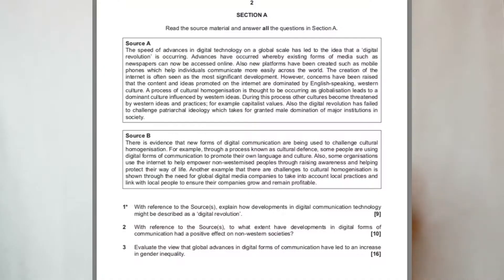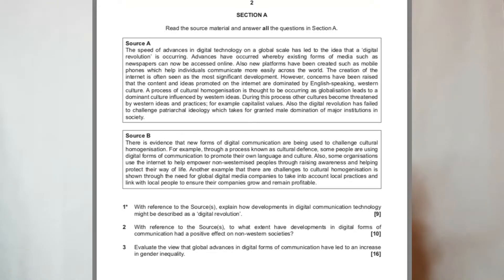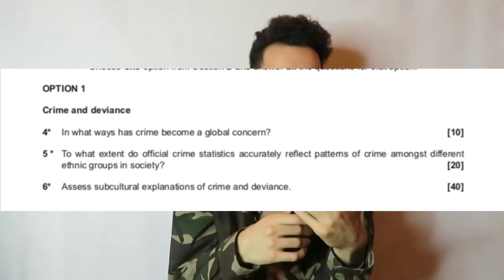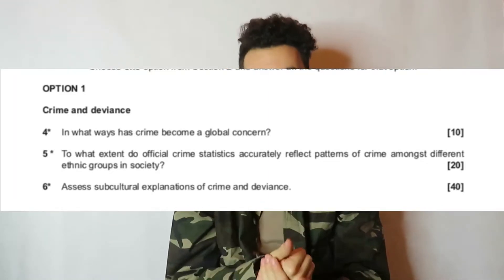You can go online and look at past papers — there are two years' series of exam papers. There are six questions: three for Crime and Deviance and three for Globalization. The Globalization section starts you off with a source — it's a 9-marker, 10-marker, and 16-marker. Then Crime and Deviance, which is the bigger unit, is a 10-marker, a 20-marker, and a 40-marker. You only get two 40-markers in Sociology across Paper 1, Paper 2, and Paper 3.